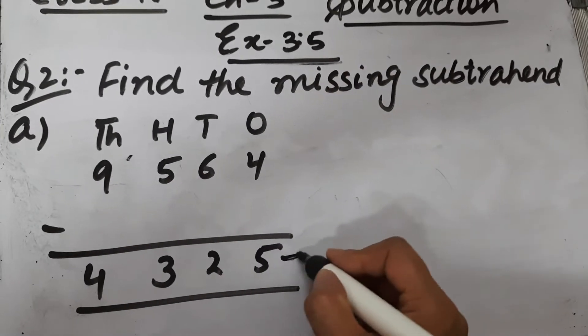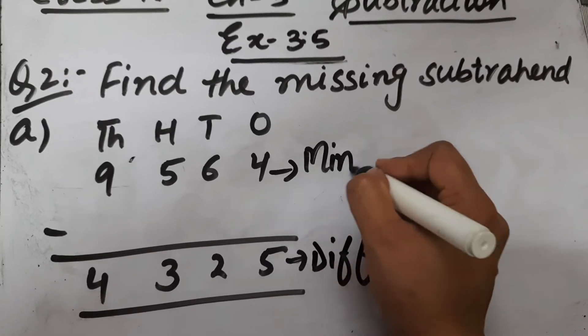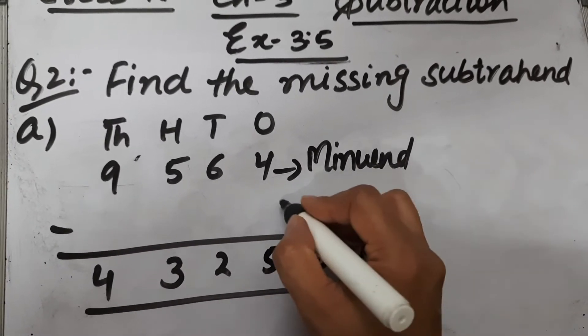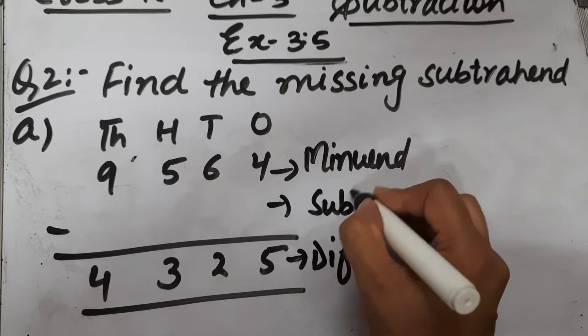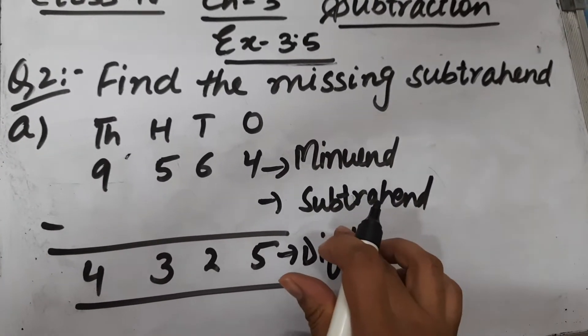This is our difference, this is our minuend, and we need to find the subtrahend. Whenever we need to find the subtrahend, we subtract the difference from the minuend.